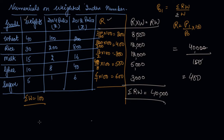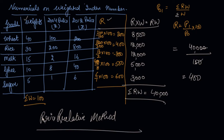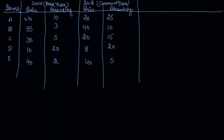This was the price relative method in the case of weighted index numbers. Now let's do the weighted aggregative method. In this question you are given the commodity items, price of the base year 2004 as P0, quantity of the base year as Q0, price of the current year as P1, and quantity of the current year as Q1. You are asked to find the price index number.